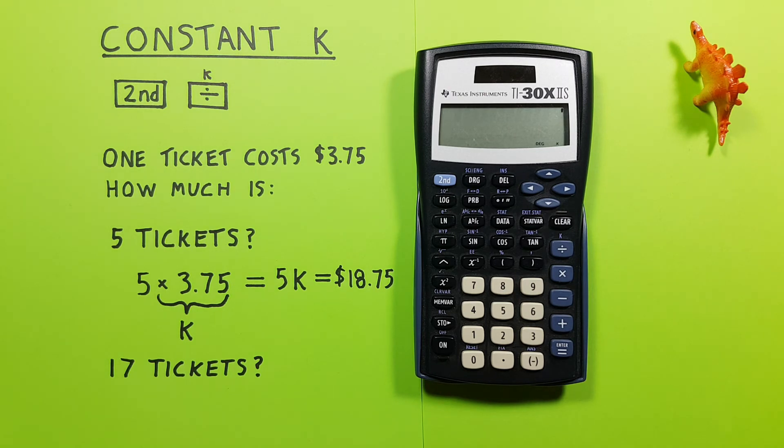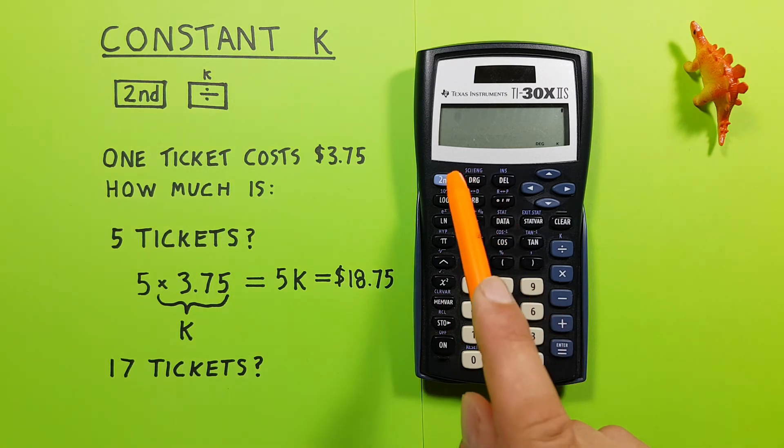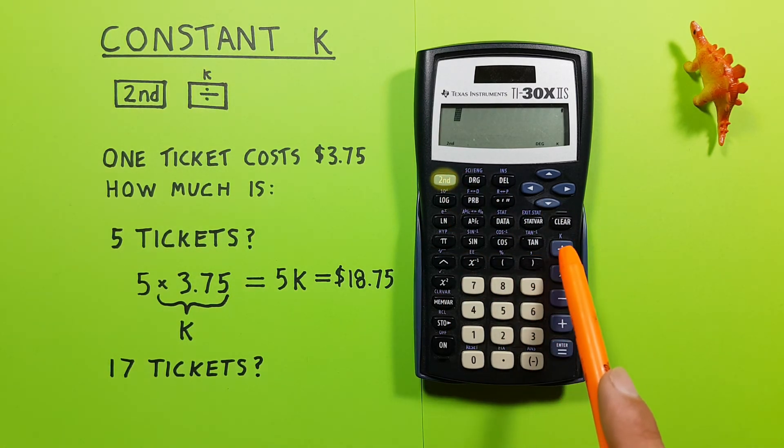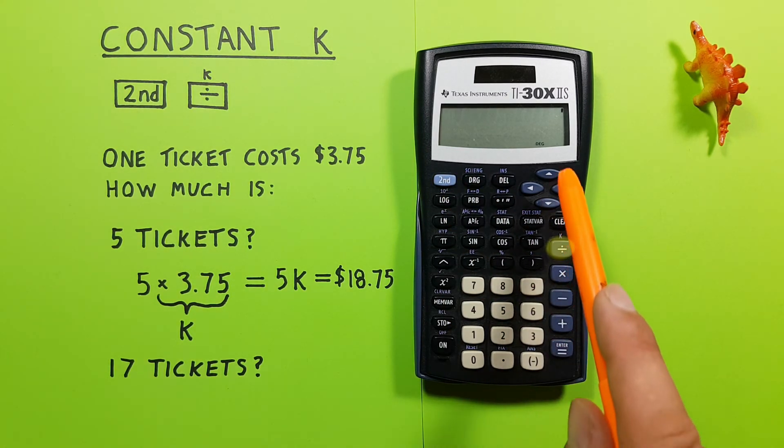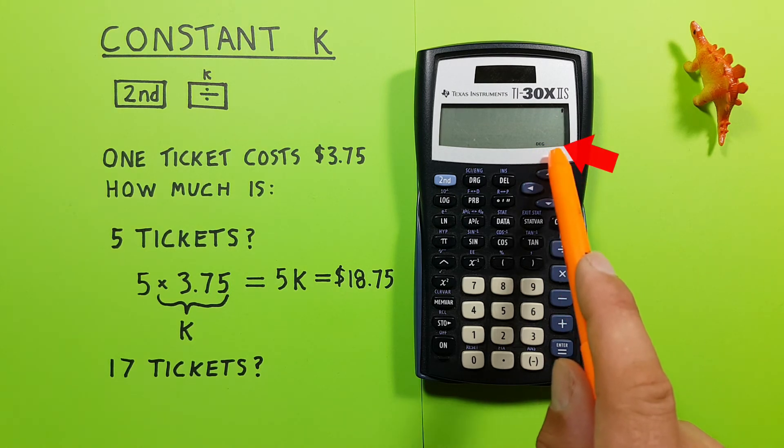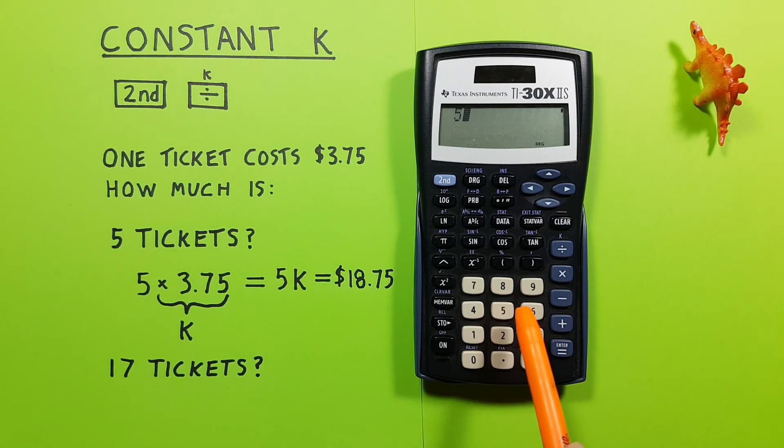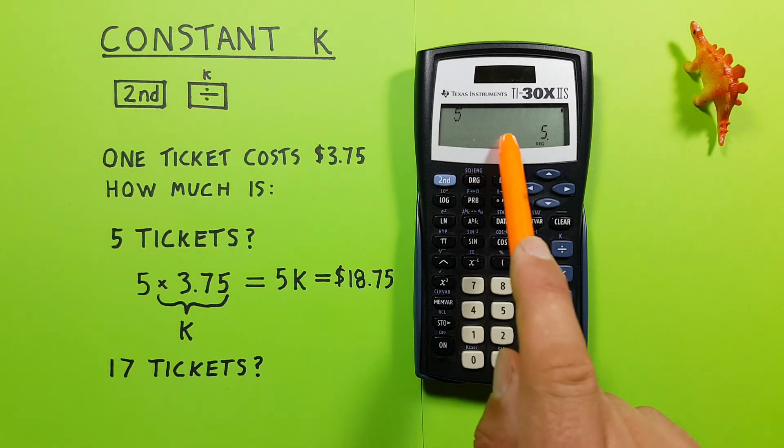If we're done using our constant, and want it to stop being applied, we can turn it off by pressing the second function key and then the division key again. And the K should now disappear from the bottom of our screen. And now when we hit something like say five, our constant is no longer applied.